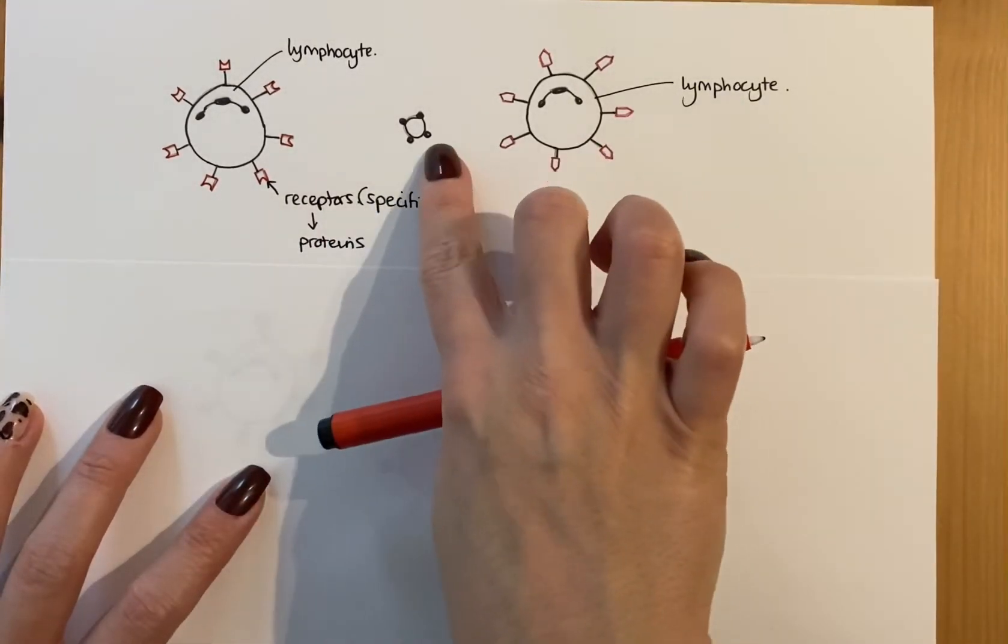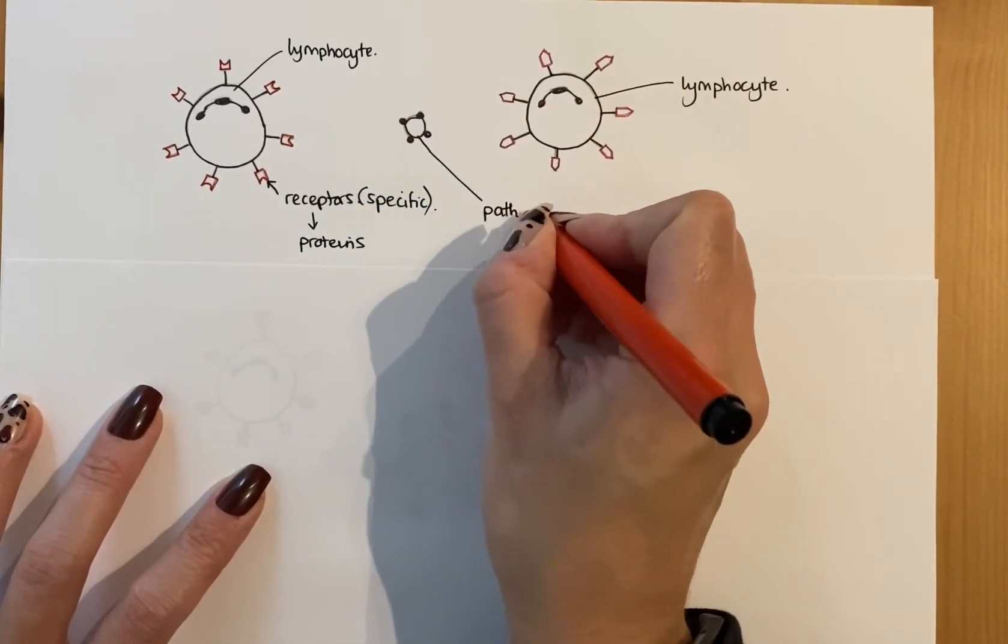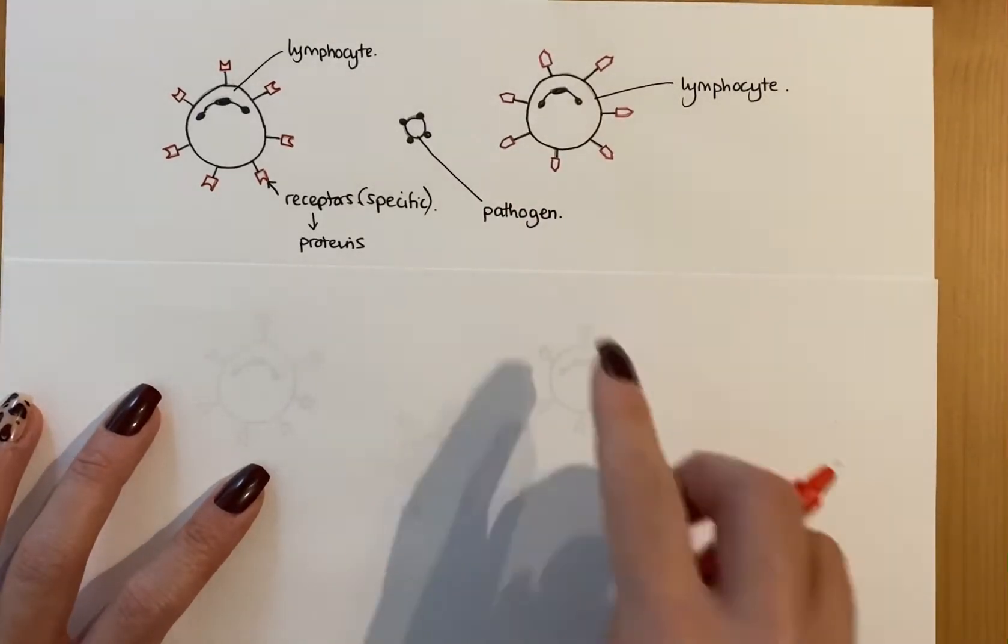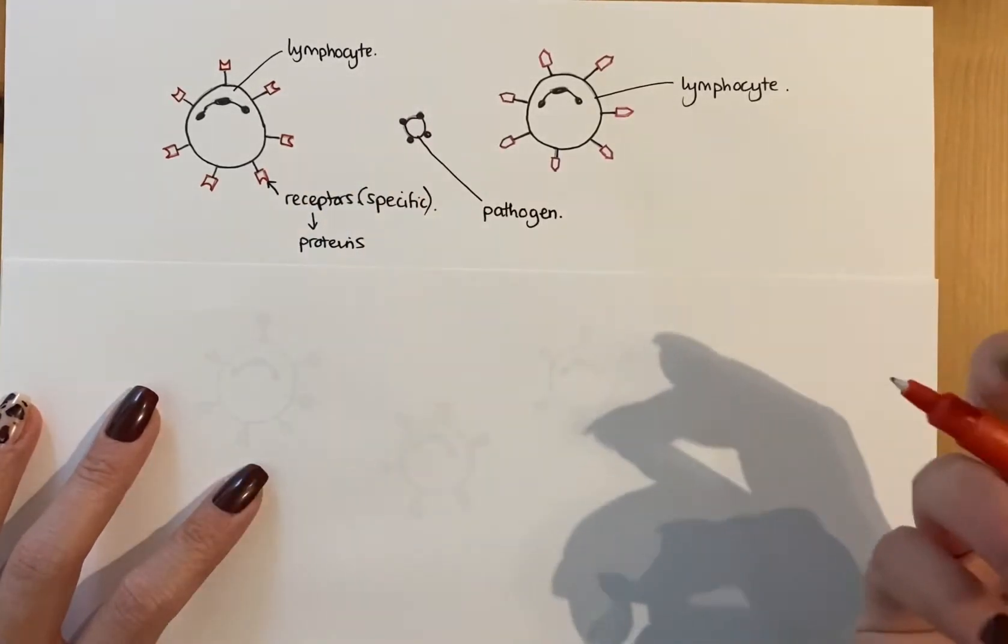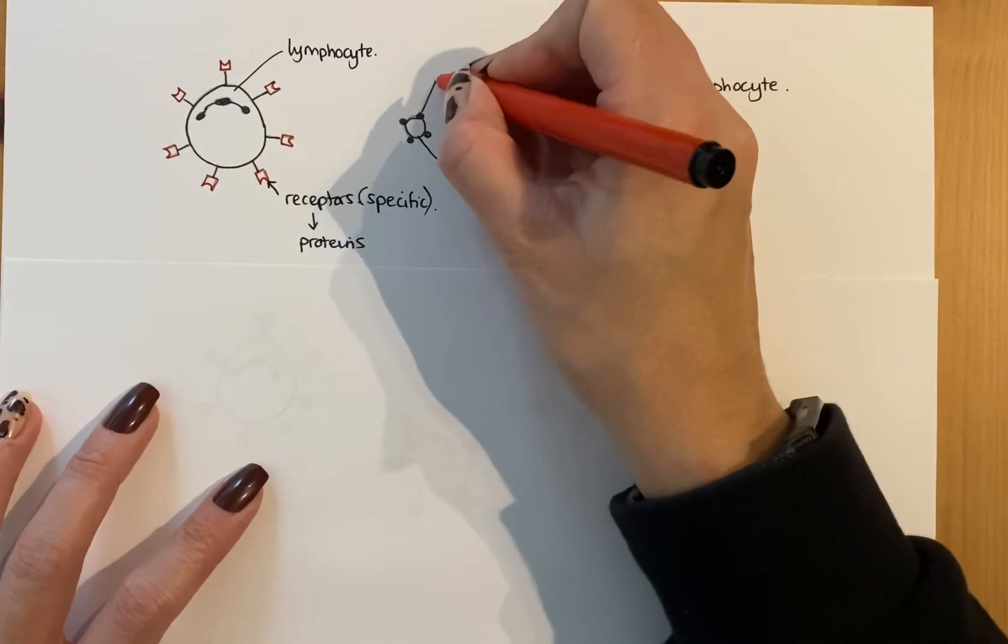Now this one guy in the middle here that I've got is a pathogen. And remember, a pathogen is a disease-causing microorganism. That could be a virus, that could be Covid for example, or it could be measles or whatever else.